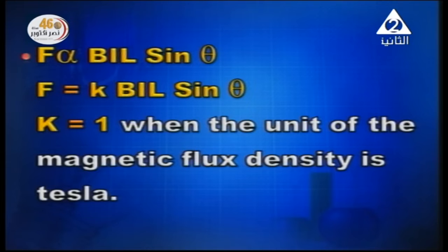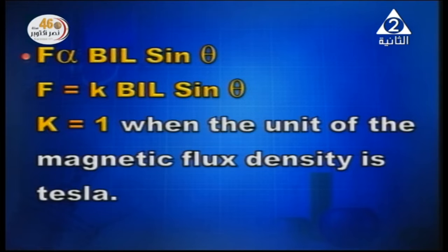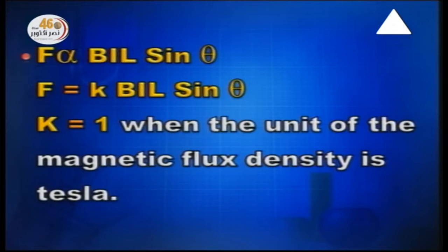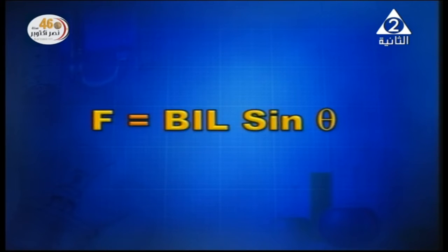Here, B is the magnetic flux density of the field affecting the current-carrying straight wire, I is the current intensity through the wire, L is the length of the wire in the field, and theta is the angle between the wire and the magnetic field. When the proportionality sign is replaced by equality, the constant K equals 1 when the unit of magnetic flux density is Tesla. So the expression becomes F = B I L sine theta — this gives the magnitude of the magnetic force acting on the current-carrying straight wire.